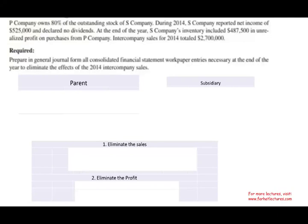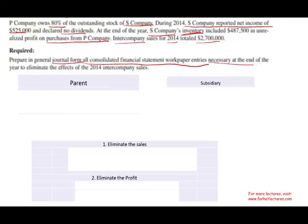Let's take a look at this example. P Company owns 80% of the outstanding stock of S Company. During 2014, S reported net income of $525,000 and declared no dividends. At the end of the year, S Company's inventory included $487,500 in unrealized profit on purchases from P Company. Intercompany sales for 2014 totaled $2.7 million. The question is: prepare the journal entries for all consolidated financial statement workpaper entries necessary at year-end to eliminate the effect of 2014 intercompany sales.